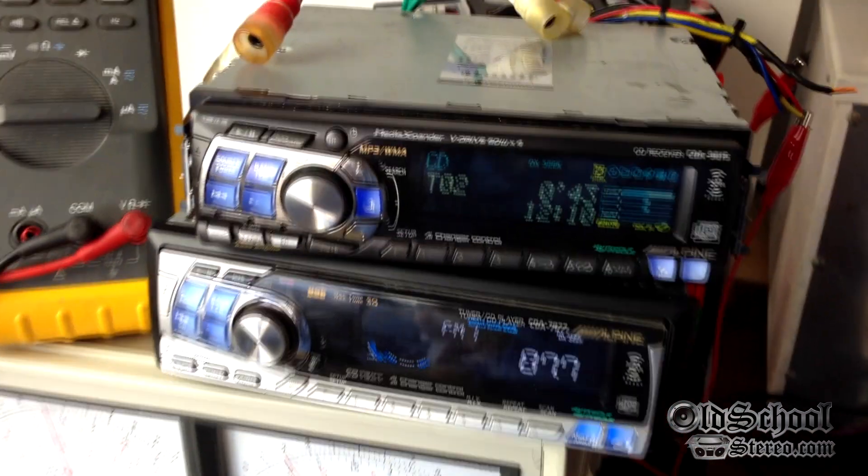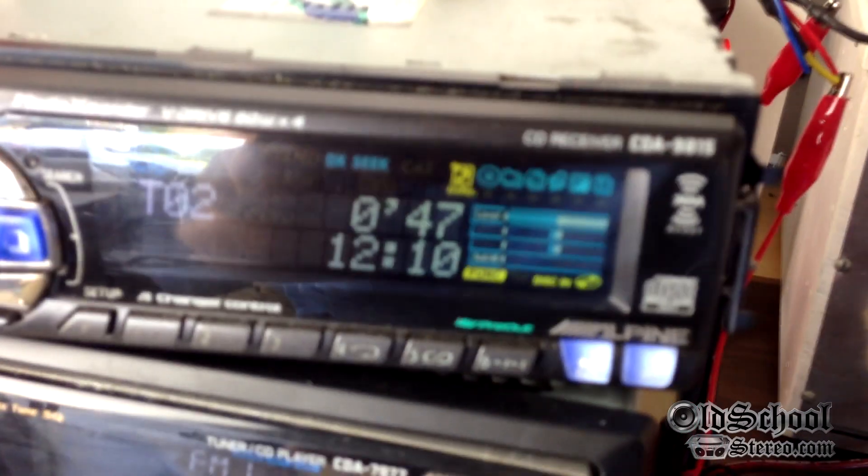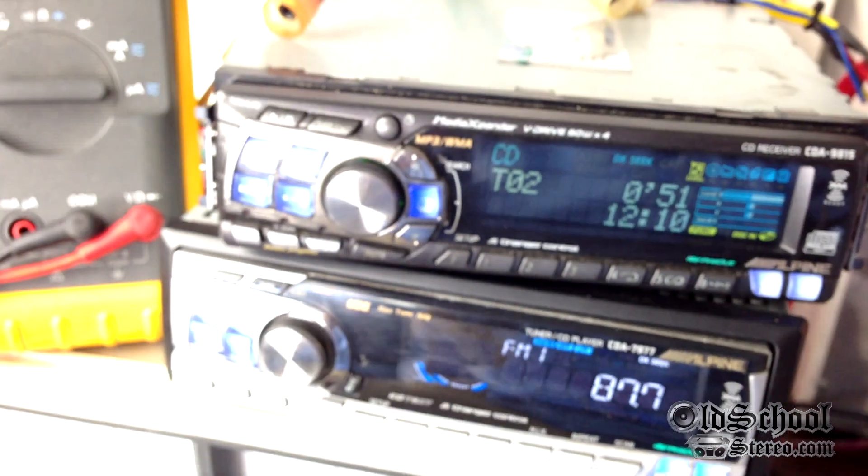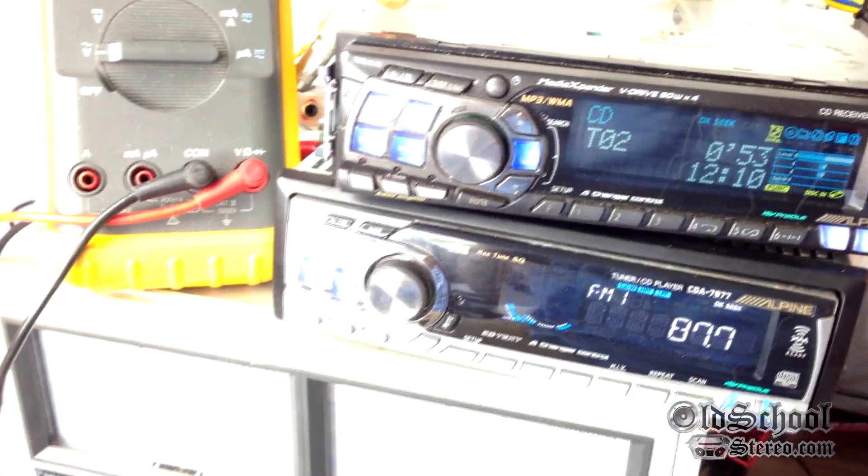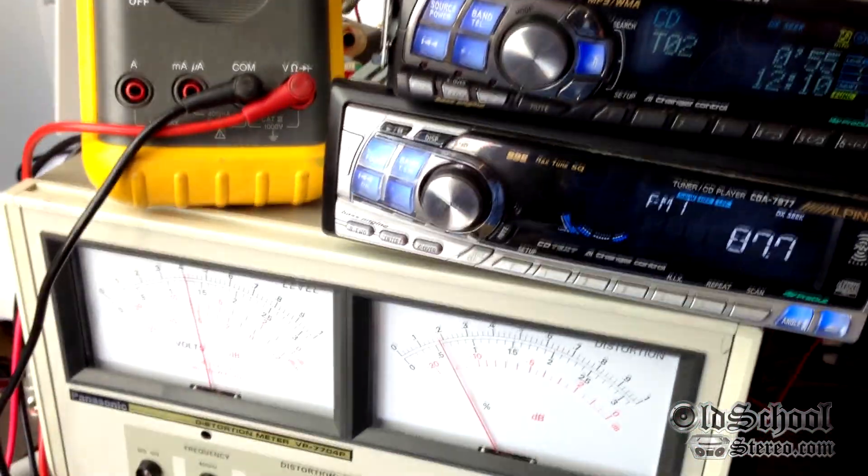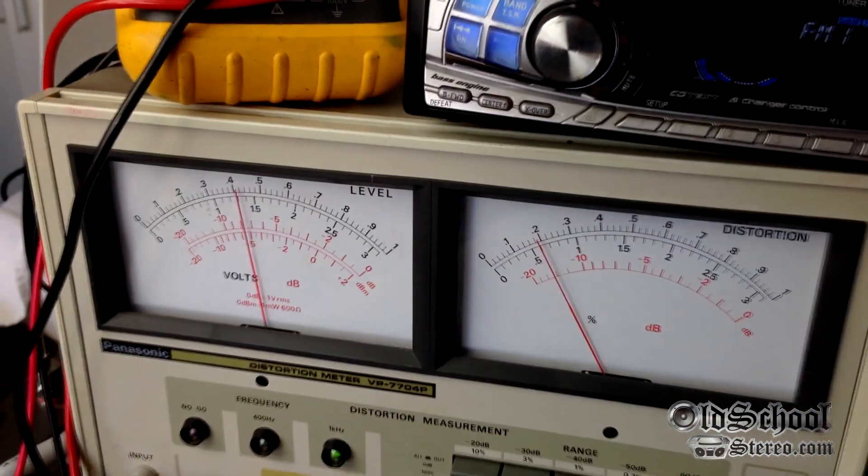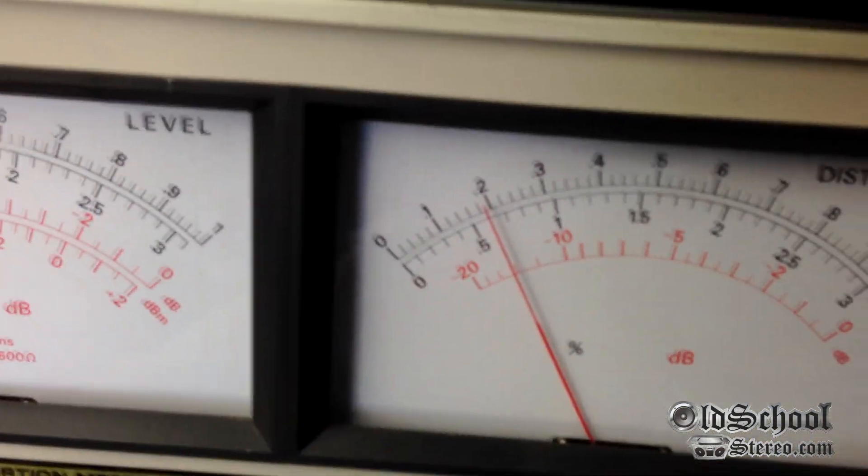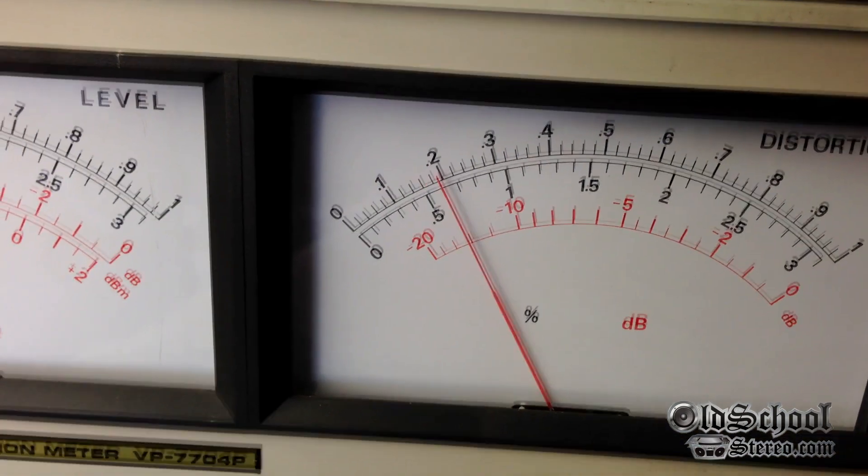I just want to show you guys I did another test of the Alpine CDA-9815, testing the distortion. This time I made sure that the internal amplifier, the IC as it's called, was turned off, and got some interesting results. As you can see, we have less than 0.02 percent distortion.